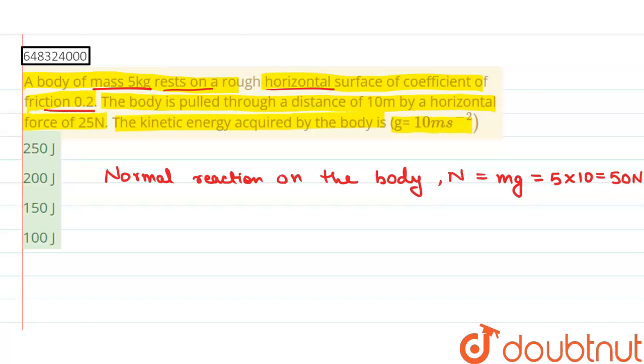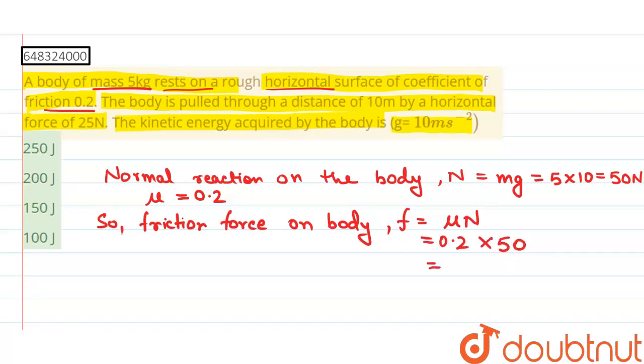Now, normal reaction on the body equals 50 newtons and mu is given as 0.2. So friction force on the body f equals mu into N, which equals 0.2 into 50, which equals 10 newtons.